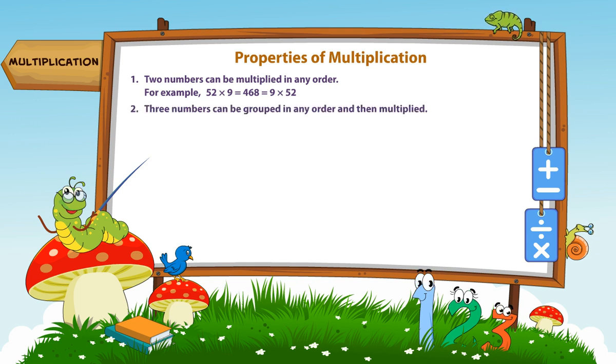Three numbers can be grouped in any order and then multiplied.